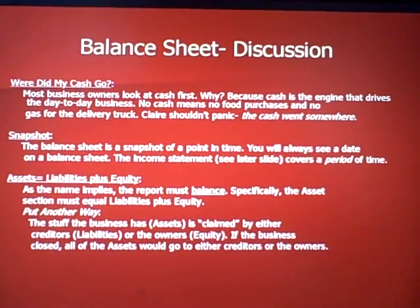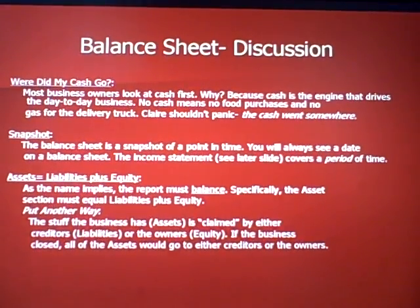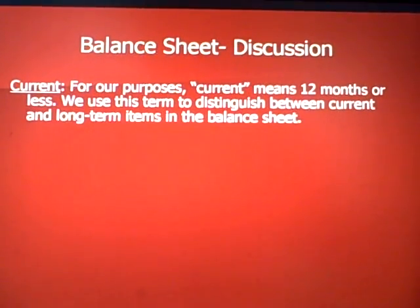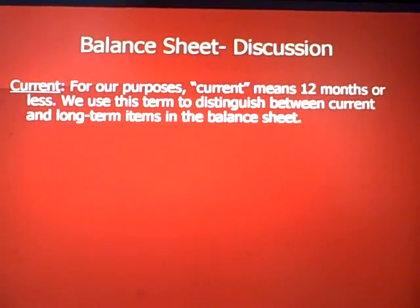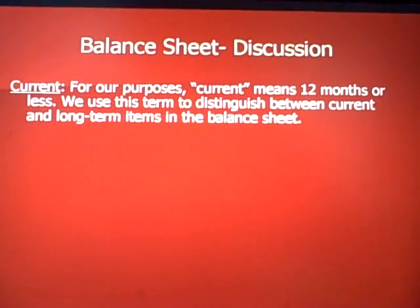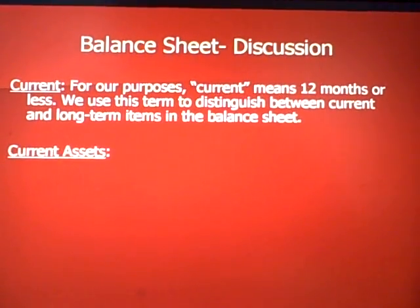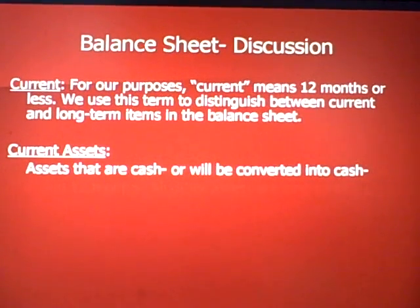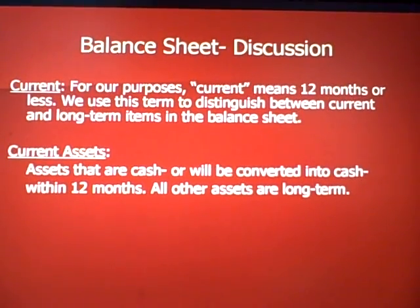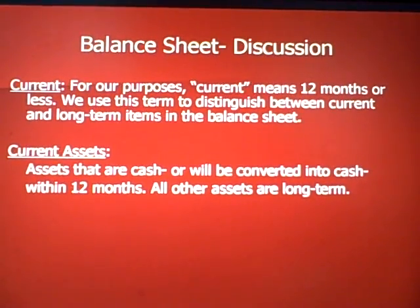If the business closed, all assets would go to either creditors or owners depending on what claims they had. Now, the term 'current' means 12 months or less — it may mean a fiscal year for some businesses. On a more detailed balance sheet, items would be divided into current and long-term. Current assets are cash or items that will be converted to cash within 12 months; all other assets are long-term.